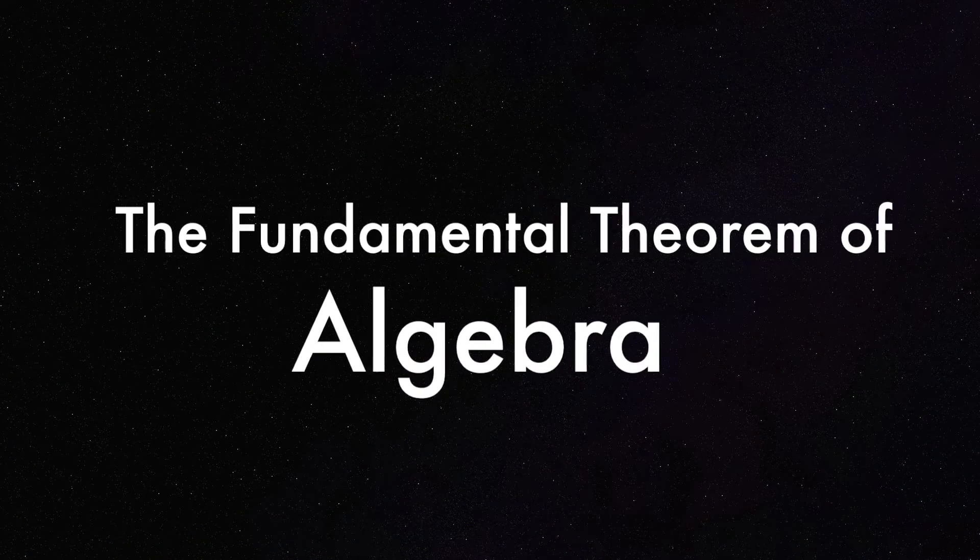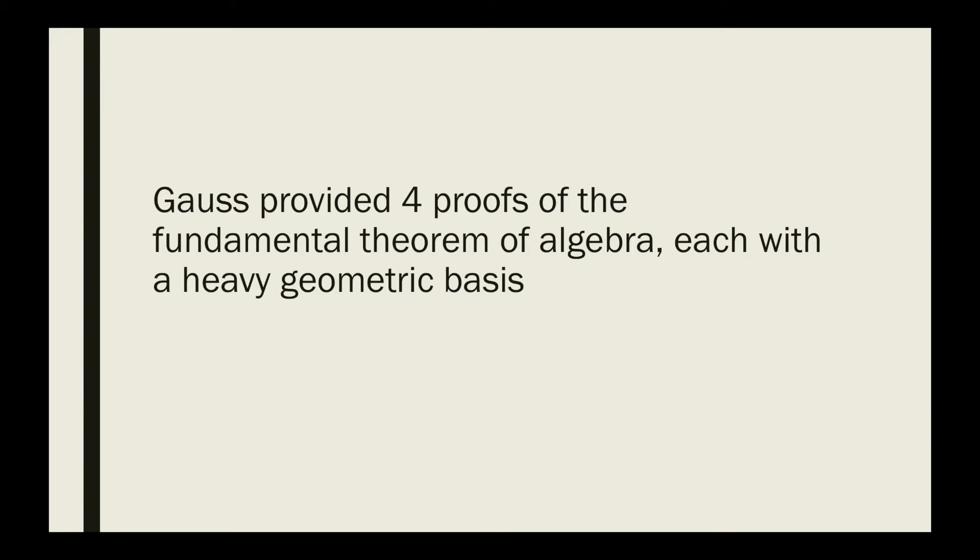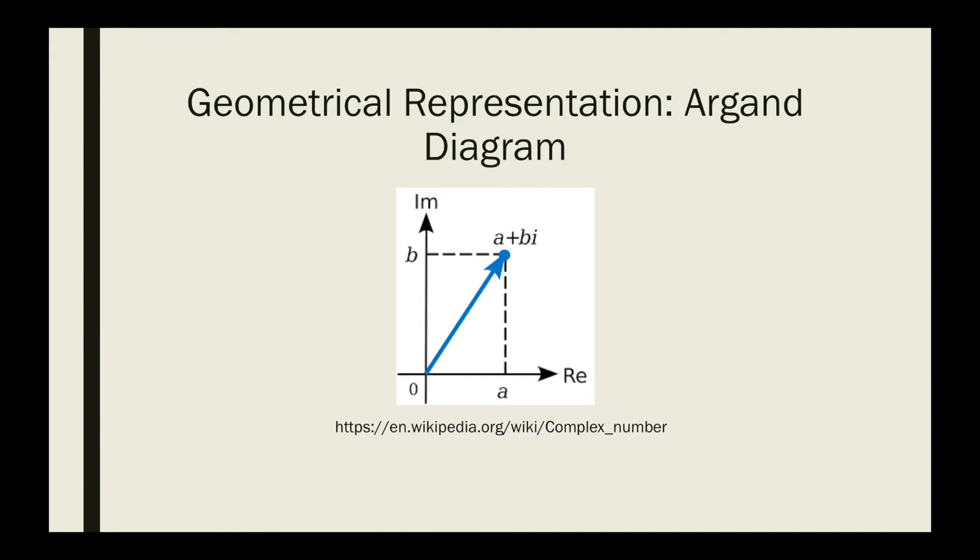Gauss produced a textbook on number theory, the title of which can be translated to Investigations in Arithmetic. It contained his work on the fundamental theorem of algebra. Previous attempts to prove this theory were deemed rather unsatisfactory, which allowed Gauss to propose four alternative proofs. His work relied heavily on geometry, giving an understanding of the Argand diagram.